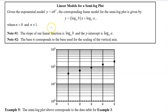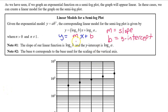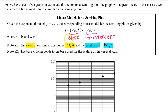We have seen that an exponential function looks linear on a semi-log plot. Specifically, on a semi-log plot, the exponential function y equals a times b to the x looks like the linear function y equals mx plus b. The slope of an exponential line on a semi-log plot is log base n of b, and the y-intercept is log base n of a. The base n corresponds to the multiplicative change between equally spaced values on the vertical axis.